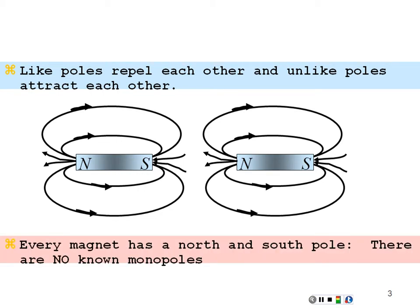Every magnet has a north and south pole — there are no known monopoles. If you cut a magnet in two, you end up with two smaller magnets, each with a north and south pole. No matter how many times you cut, you will never isolate a single pole. For every north pole there is a south pole. This is a consequence of the fact that magnetic field lines are truly closed loops — cutting the magnet always yields closed loops.